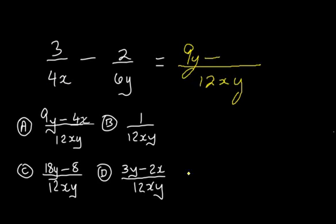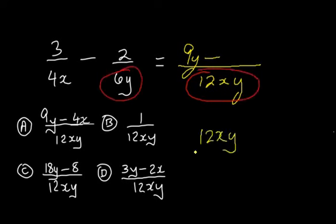Now, let's look at dividing the LCM, 12xy, by 6y. 12xy divided by 6y. y into y goes once. 6 into 6 goes once, and 6 into 12 goes twice, or 2 times. 2 times x leaves us with 2x.